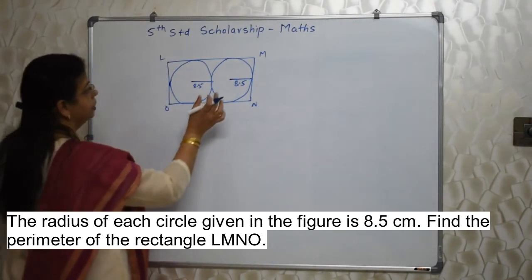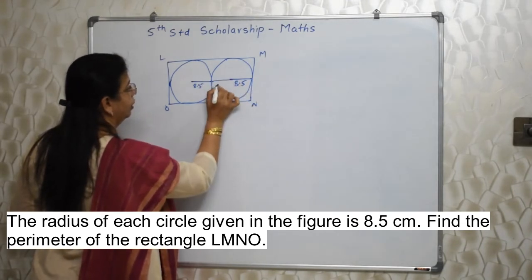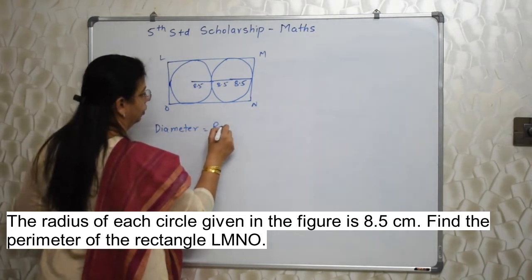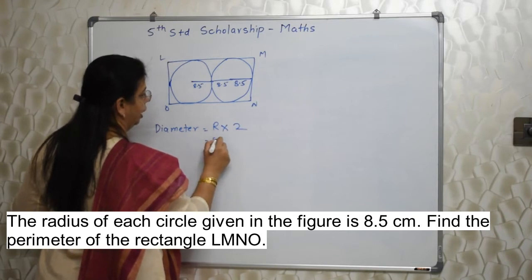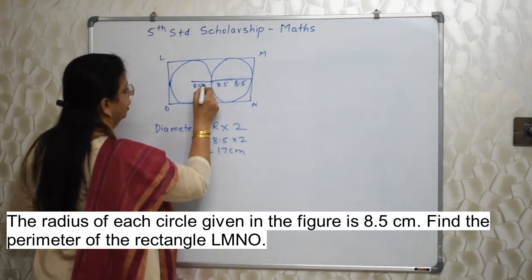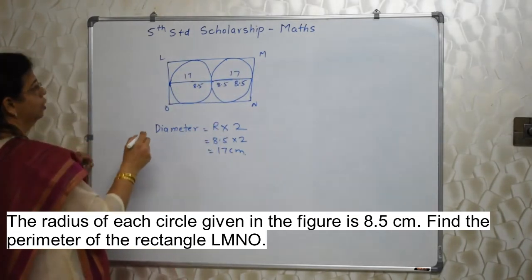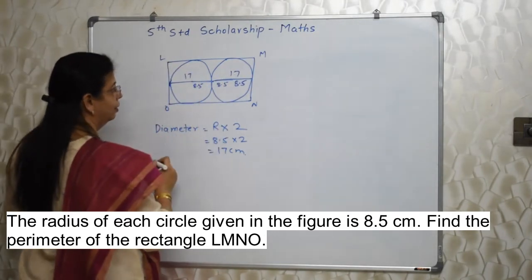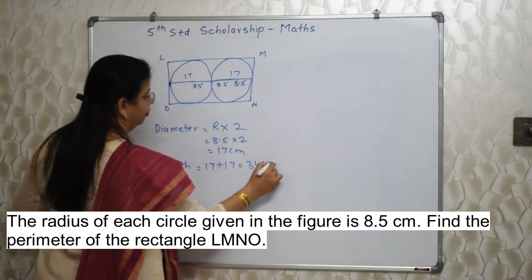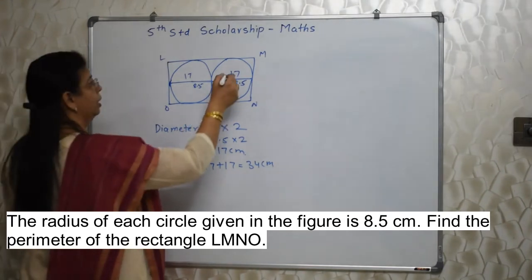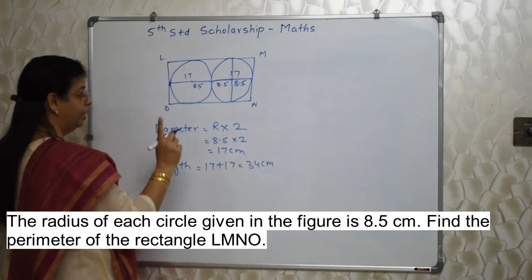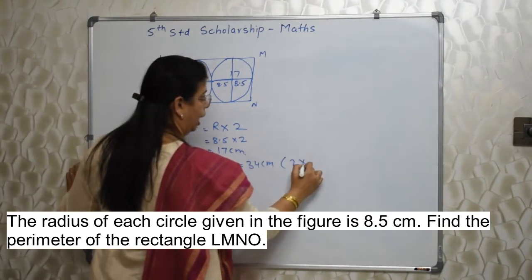Observe — it is possible. The diameter will be radius into 2, that is 8.5 into 2, which is 17 cm. So this section is 17. Obviously the next is also 17. So the length is 17 plus 17 equals 34 cm. Similarly, the breadth: this radius and this radius — 2 times radius — is also 17 cm. Please be careful: length was 2 diameters, but breadth is 2 times radius only.